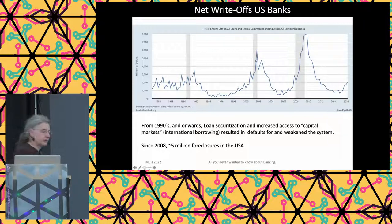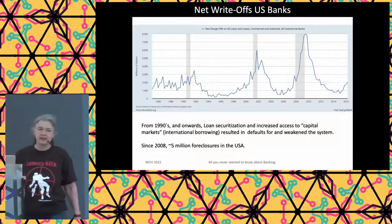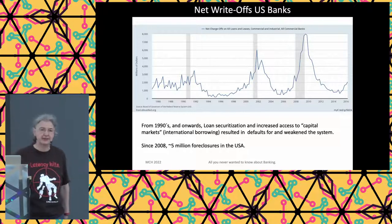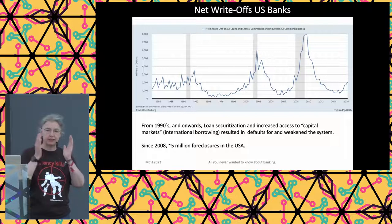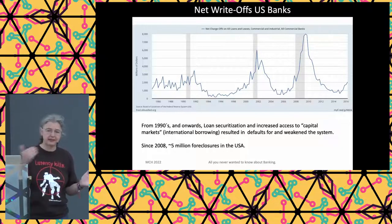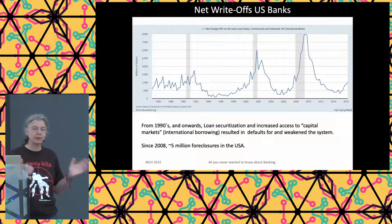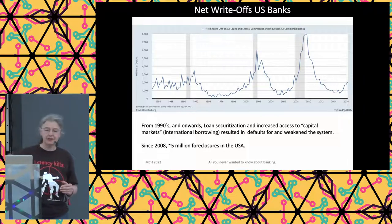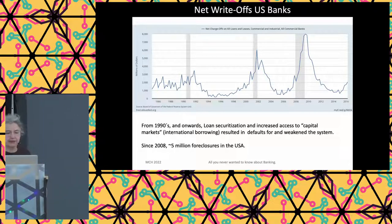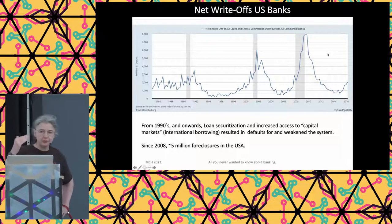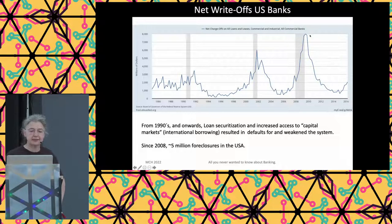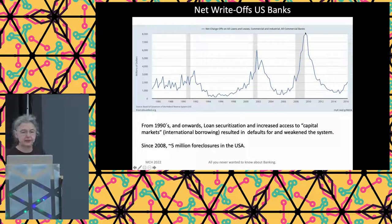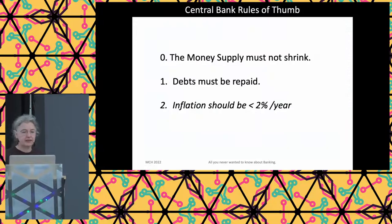Loan defaults are what economists call a lagging indicator — I would call it a latency problem. Somebody defaults on their loan, stops paying their interest, probably stops paying their capital too. The bank doesn't just then and there write it off. In fact, if the bank can't afford to write it off without hitting its bank capital, it's going to keep that loan on its books. This is the so-called zombie bank phenomenon — a bank has a lot of bad debt, it's making a little bit of money on the interest perhaps, and it can't make any new loans because the rules won't let it. Common in Japan in the 1990s and also in Italy now.